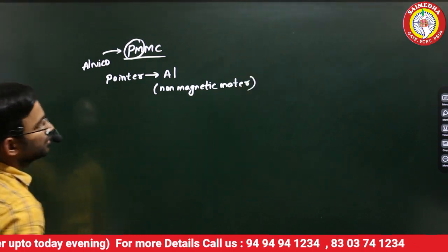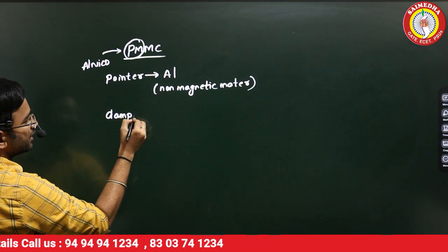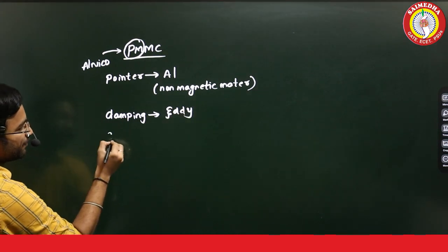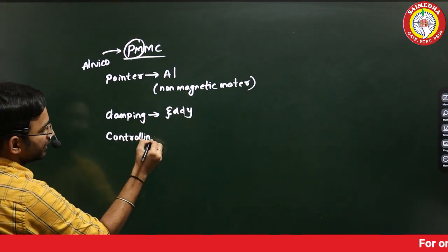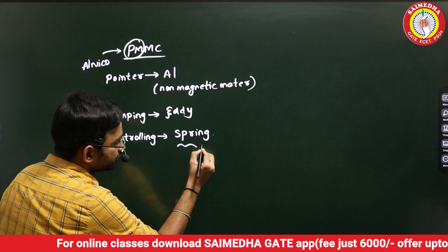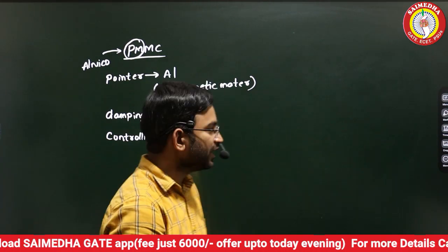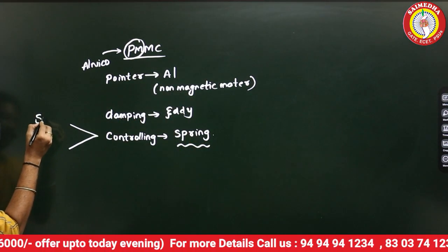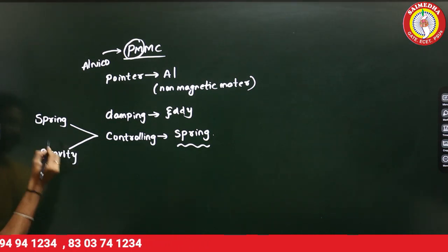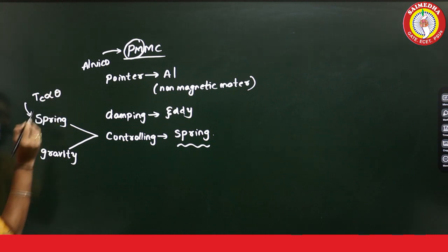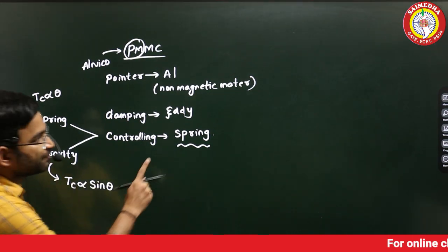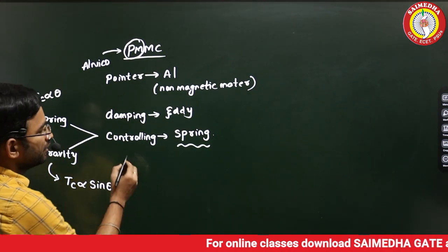The type of damping used: since permanent magnets are present, it is eddy current damping. The type of controlling used: spring control is used. We use two springs. Controlling torque is proportional to theta (spring control). For gravity control, controlling torque is proportional to sin theta.